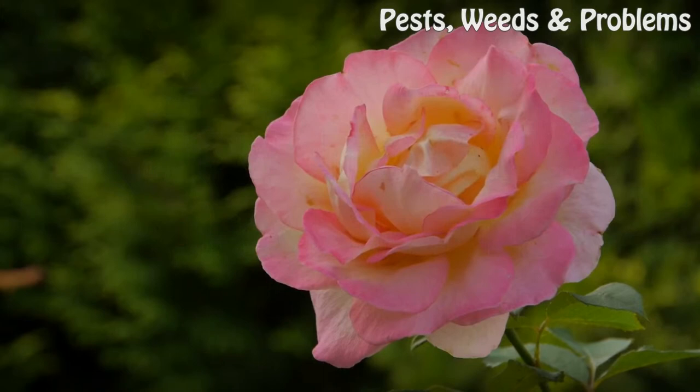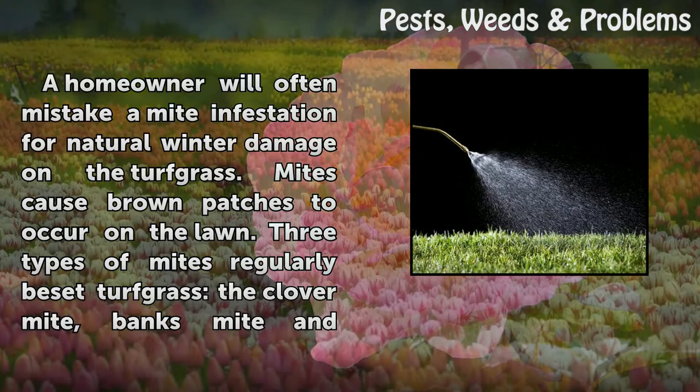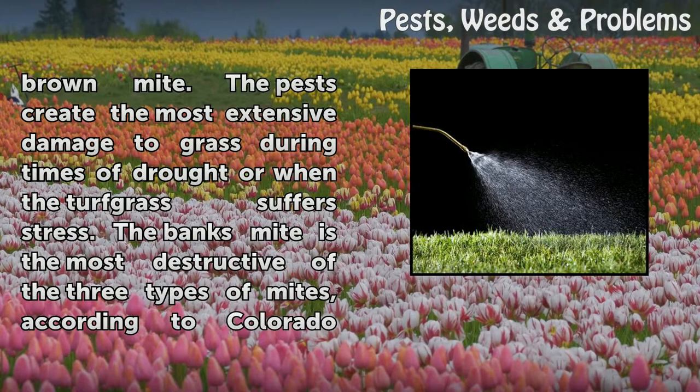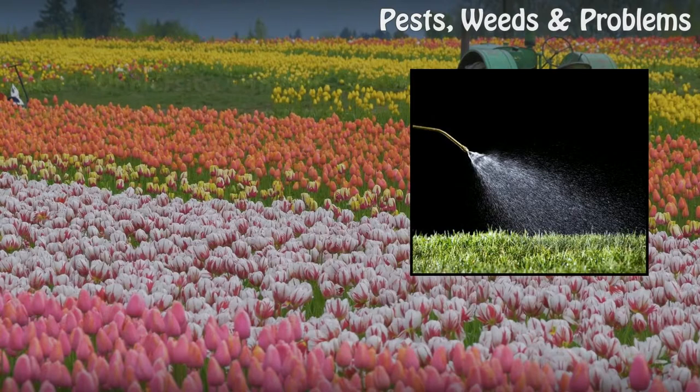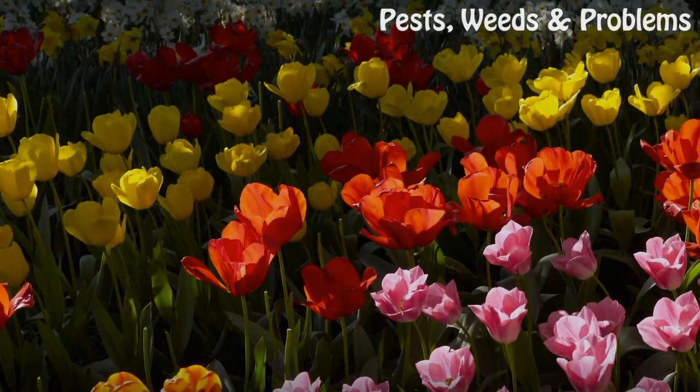How to Kill Grass Mites. A homeowner will often mistake a mite infestation for natural winter damage on the turf grass. Mites cause brown patches to occur on the lawn. Three types of mites regularly beset turf grass: the clover mite, Banks mite, and brown mite. The pests create the most extensive damage during times of drought or when the turf grass suffers stress. The Banks mite is the most destructive of the three types, according to Colorado State University. The mite infestation will progress quickly and the turf grass will suffer severe dieback if not promptly treated.